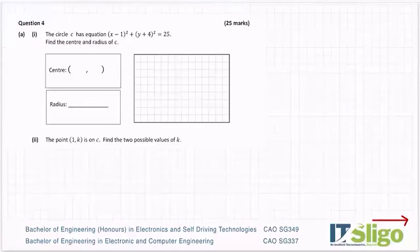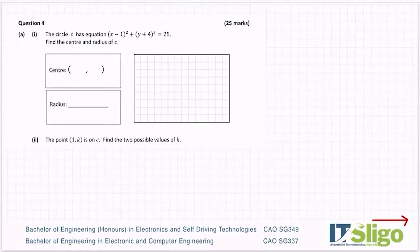Question four of the 2020 Paper Two from the Leaving Cert was on the circle. Part A, part one: the circle C has an equation (x minus 1) squared plus (y plus 4) squared equals 25. Find the center and radius of C.